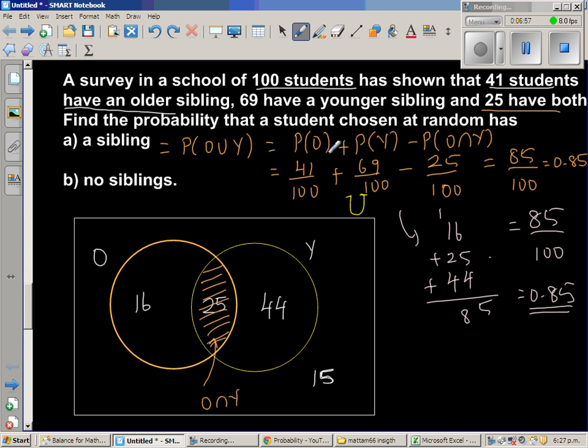And what's the probability that a student chosen at random has no sibling? So no, these are the 15 students who have no sibling. So for B, the answer would be 15 out of 100. This is 15% or as a decimal, this is 0.15.